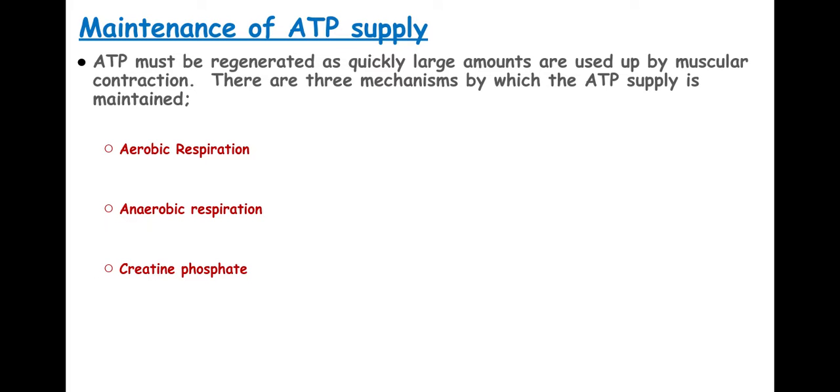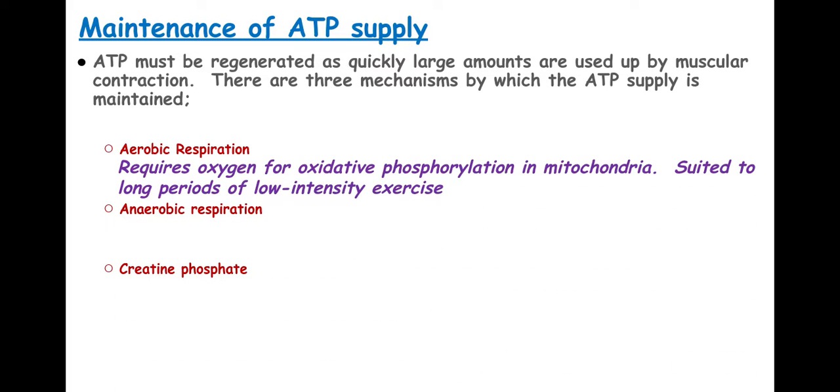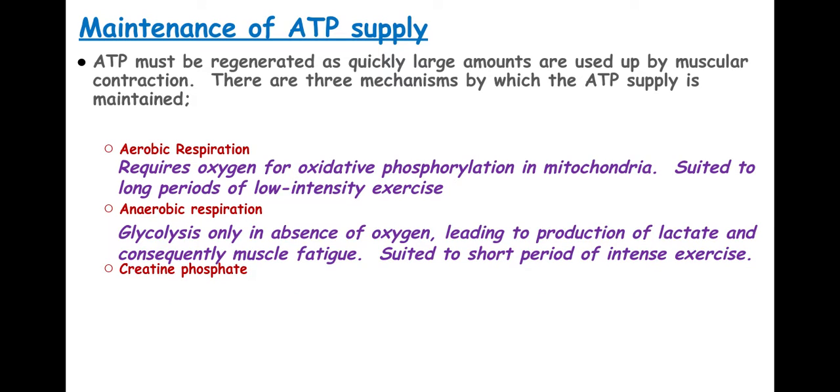So there are three ways we get this. First of all, aerobic respiration, which we should all be familiar with, occurs within the mitochondria to make the ATP. We've also got anaerobic respiration. This isn't ideal because obviously it produces lactic acid which can cause cramps and muscle fatigue. And we've also got creatine phosphate.